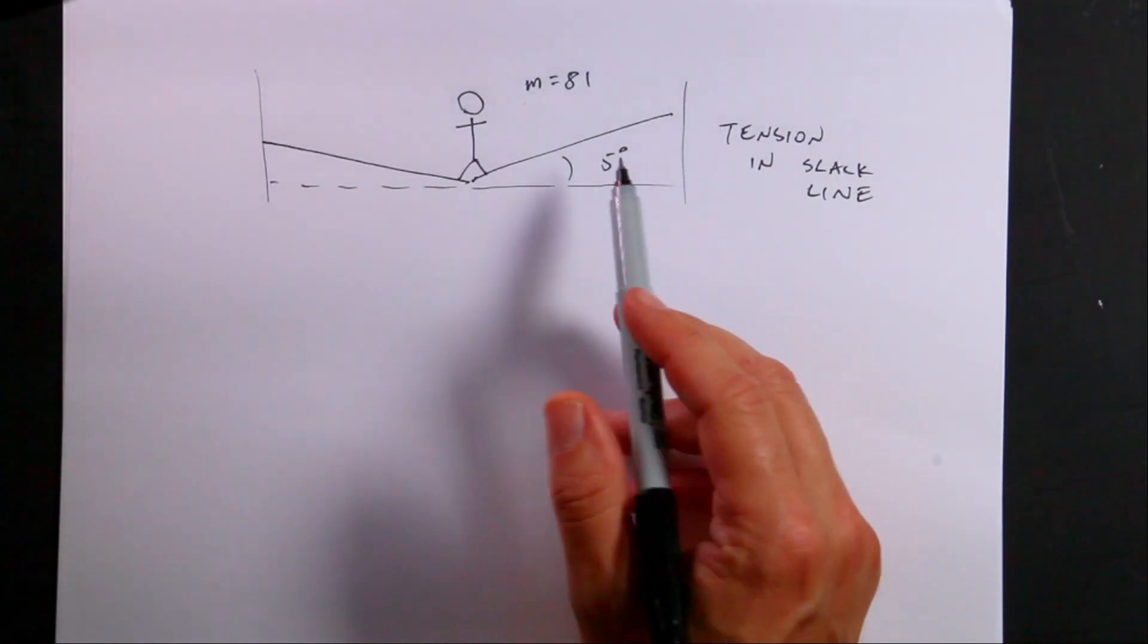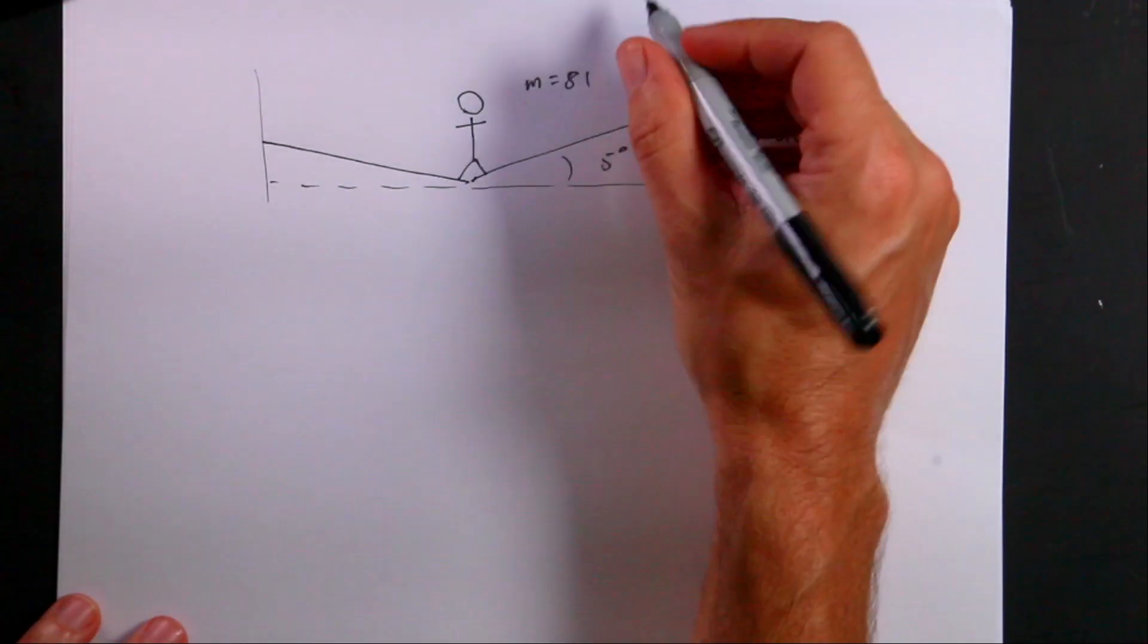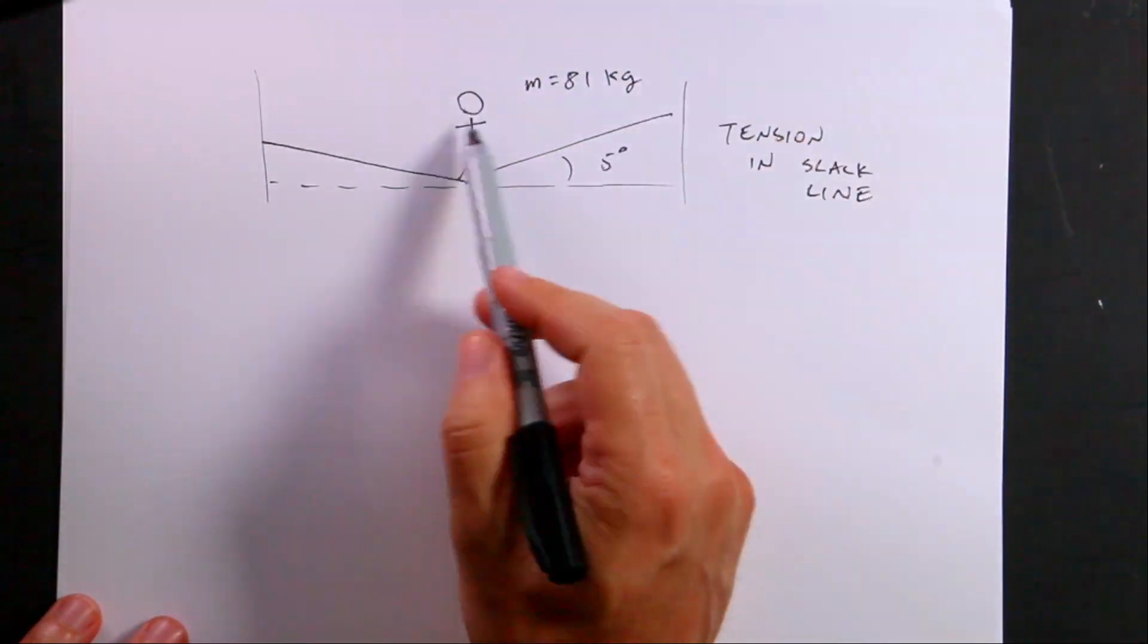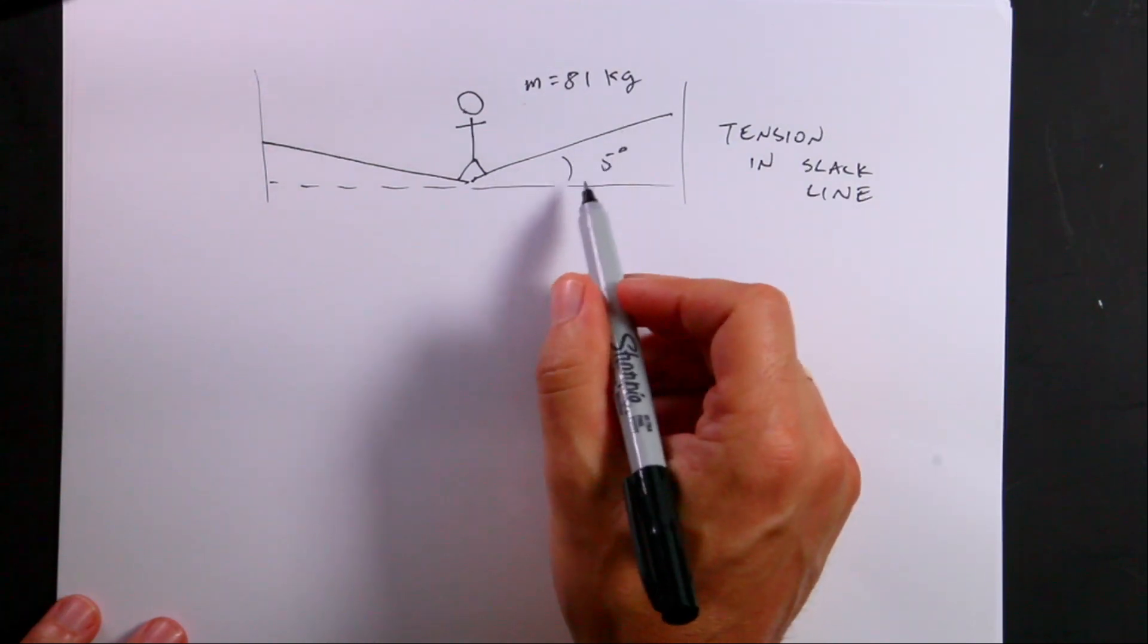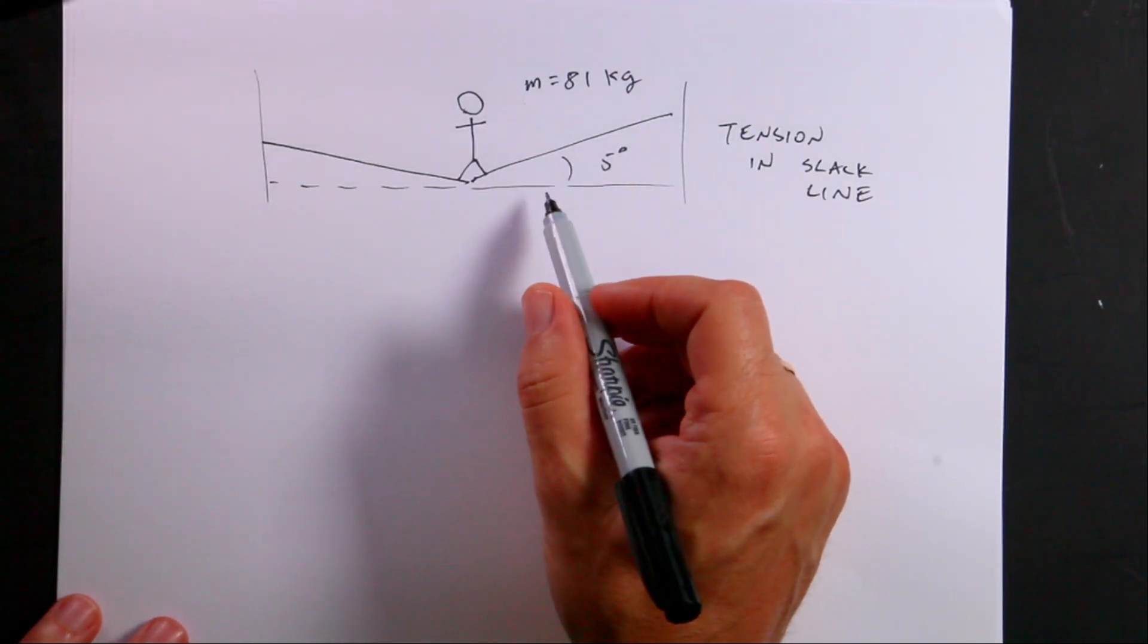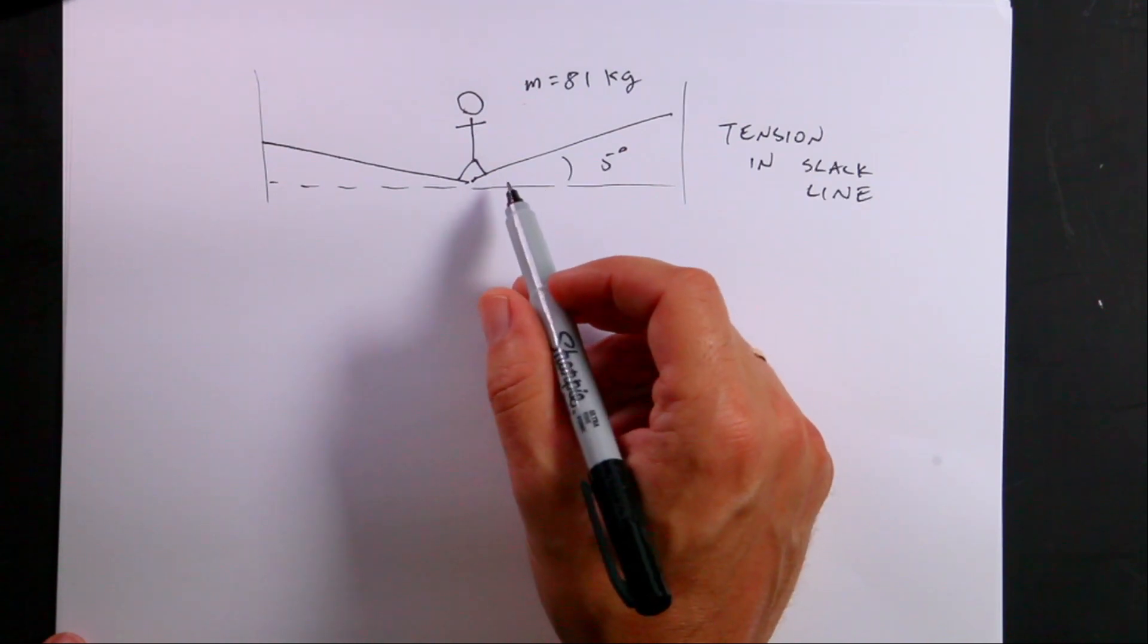And the question is, if a human stands in there with a mass of 81 kilograms, there's my human, and the slack line makes a five degree angle with respect to the horizontal, what's the tension in the slack line? So let's calculate that.